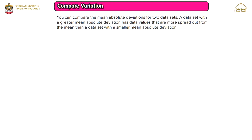Compare variation. You can compare the mean absolute deviation for two data sets. A data set with a greater mean absolute deviation has data values that are more spread out from the mean than a data set with a smaller mean absolute deviation.